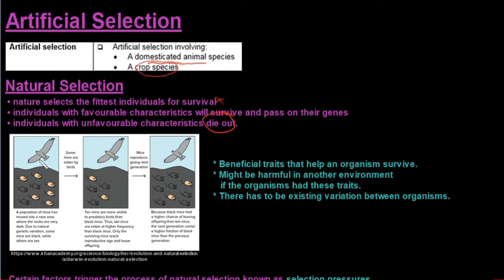Looking at this diagram at the bottom, we've got a hawk and then we've got a population of mice. And there's variation in this population because we've got dark-furred mice and then white-furred mice. So looking at the environment that these mice live in, it's a very dark environment.